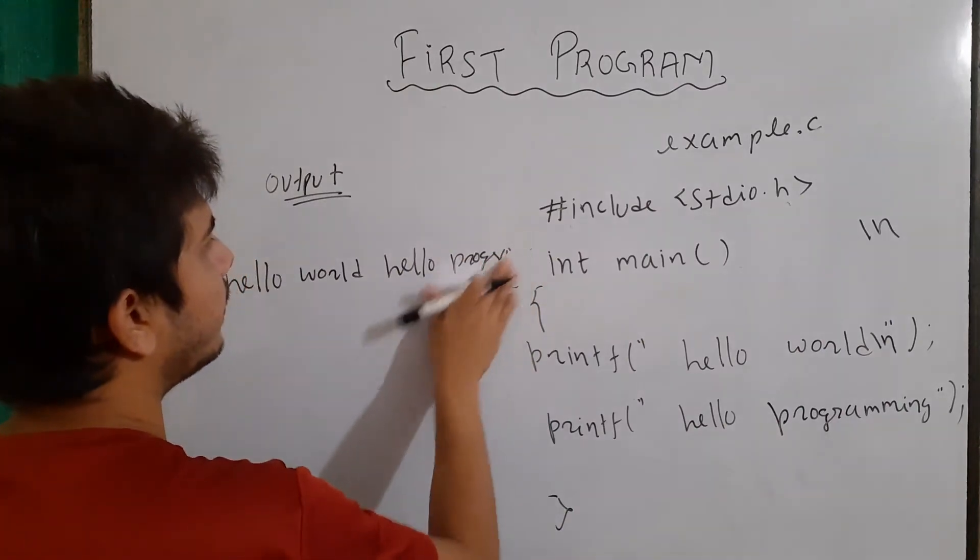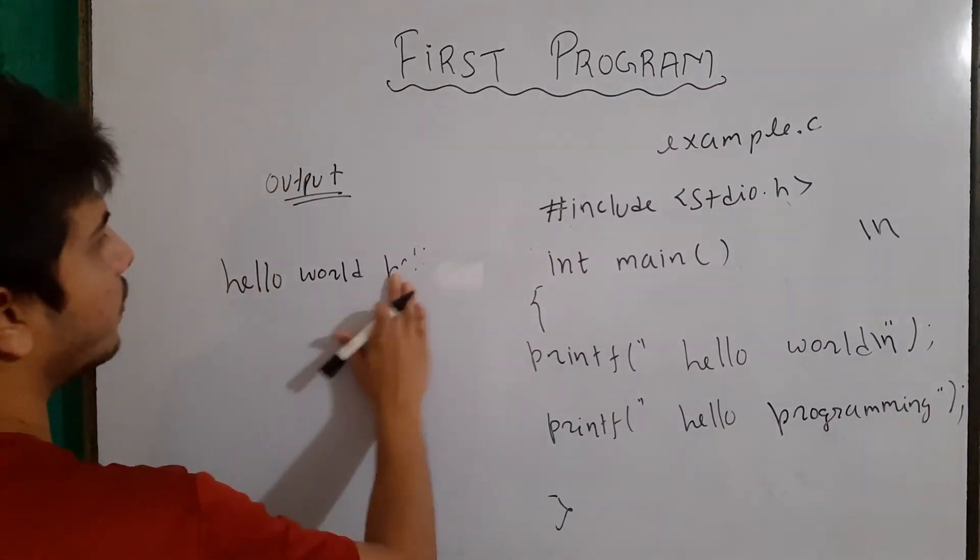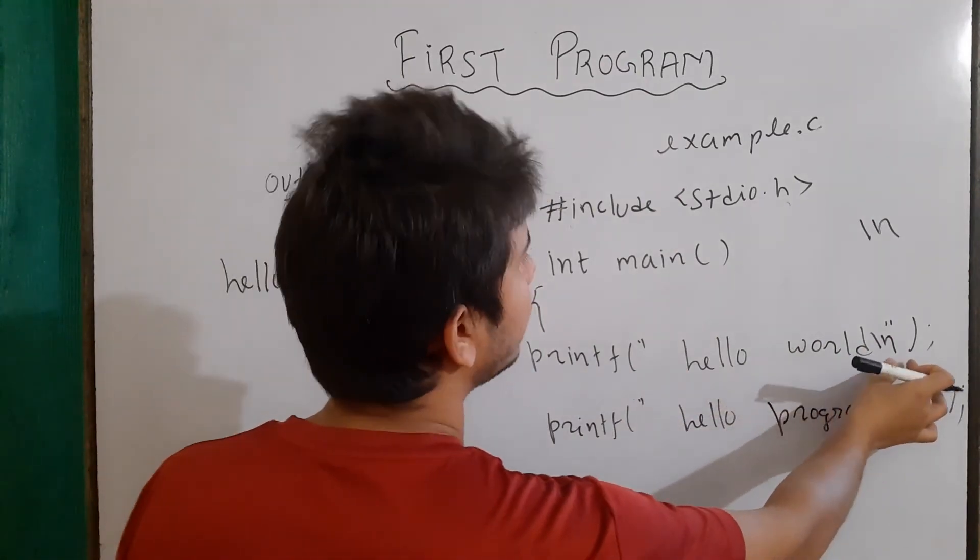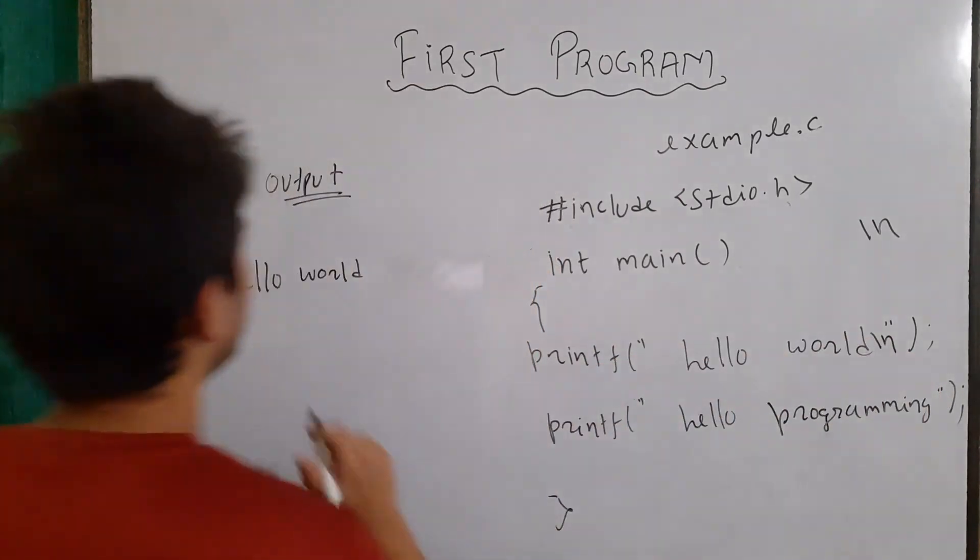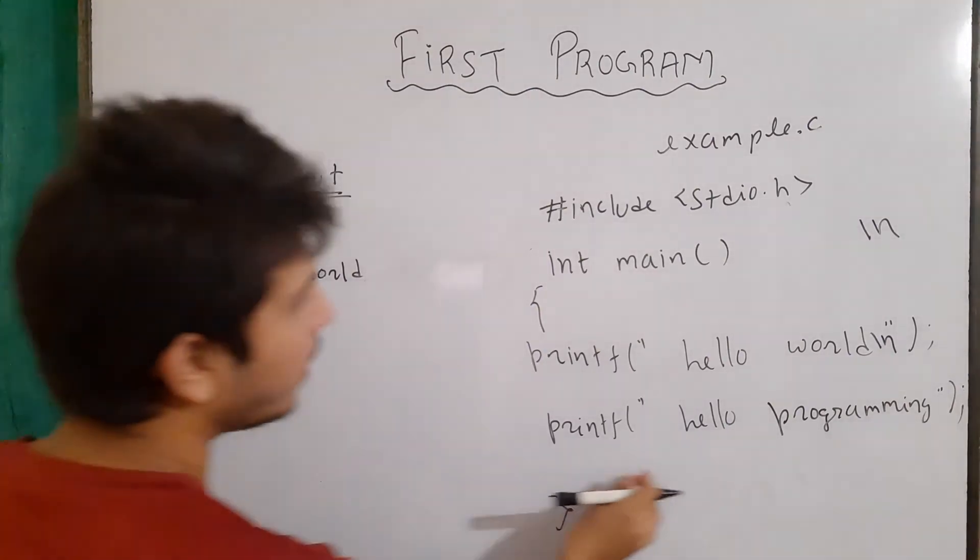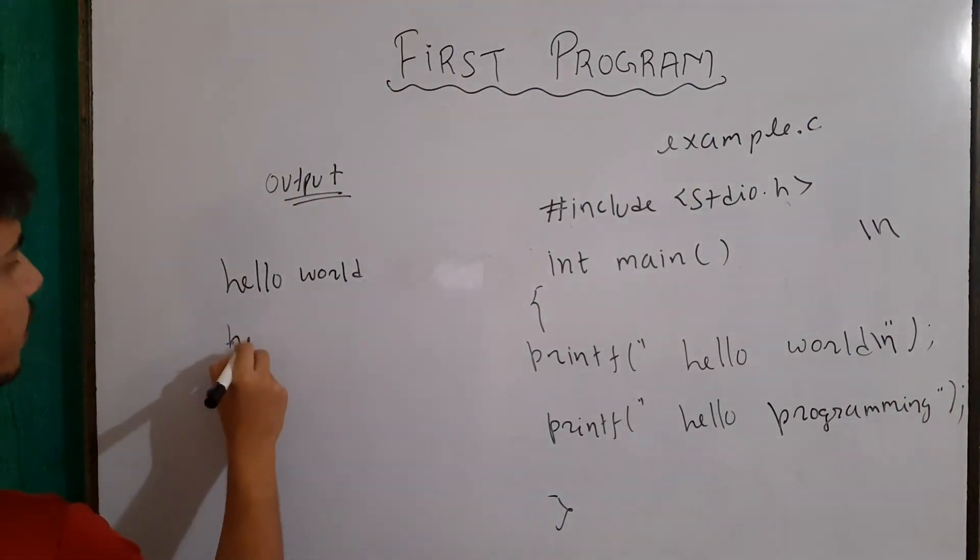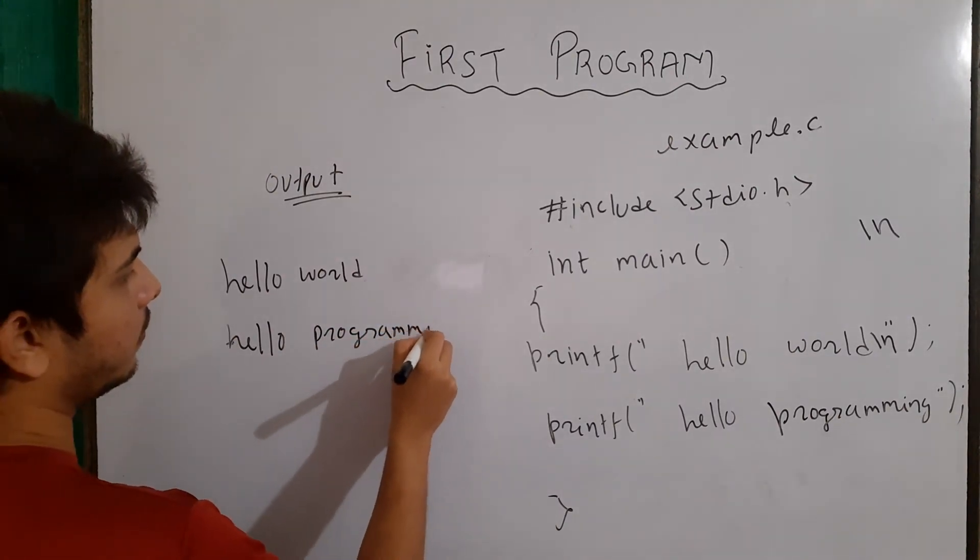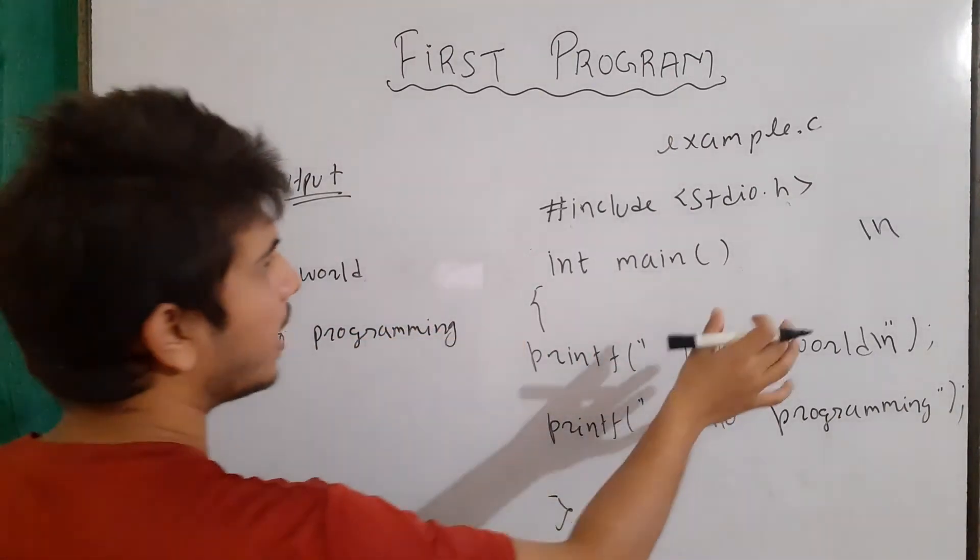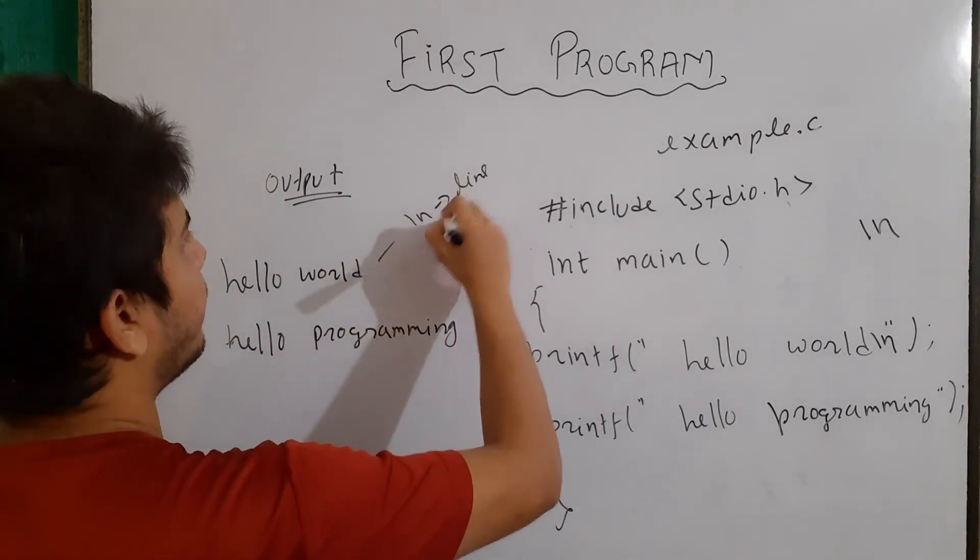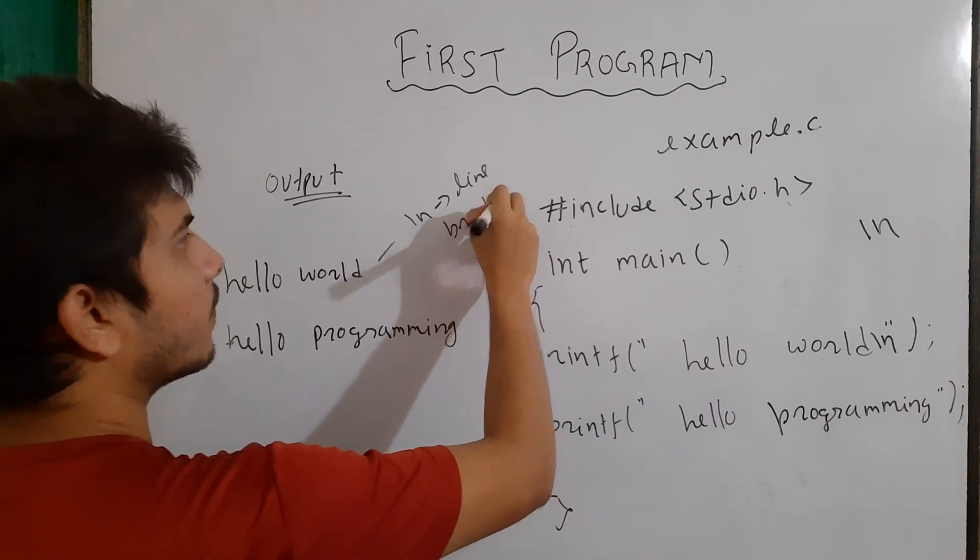For example, here, if we write the same program with the slash n, then first of all, hello world will be printed and then it will encounter slash n. So, instead of cursor being here, our cursor will be in this location. And now we are printing hello programming. So, now it will print here, hello programming. So, basically, slash n is our line break.